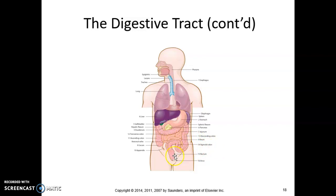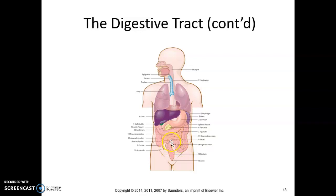It then straightens out into the rectum, and at the end of the rectum, number sixteen, is a little circular muscle — which we call the anus. So let's recap the large intestine: it starts at the cecum where the appendix hangs off, up the ascending colon, turns across to the transverse colon, then number thirteen the descending colon, takes a little S-curve for the sigmoid colon, straightens into the rectum, and ends in the anus.